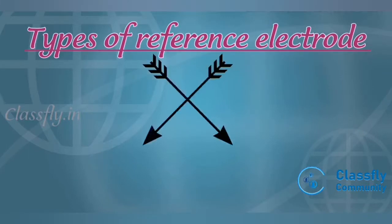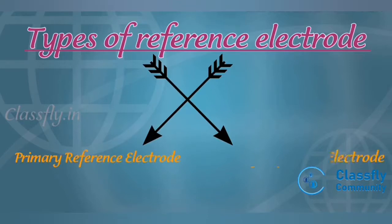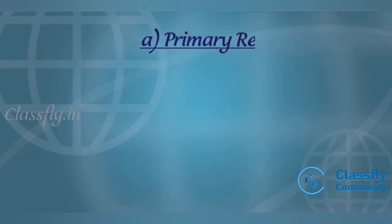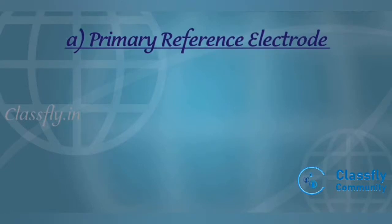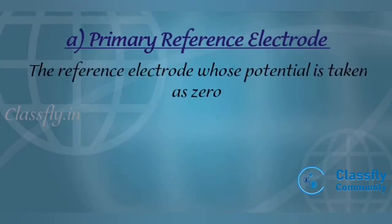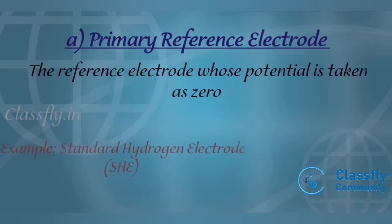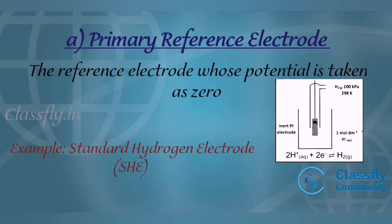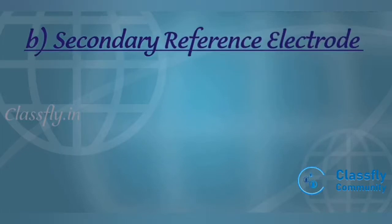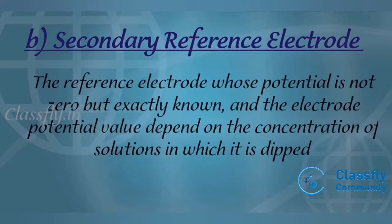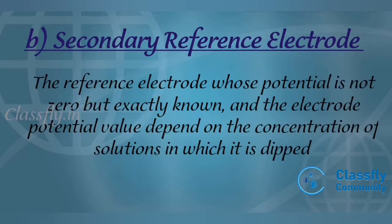Reference electrodes are mainly divided into two types: primary reference electrodes and secondary reference electrodes. A primary reference electrode is one whose potential is taken as zero — for example, the standard hydrogen electrode. A secondary reference electrode is one whose potential is not zero but is exactly known, and the electrode potential depends on the concentration of the solution in which it is dipped.